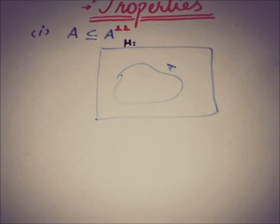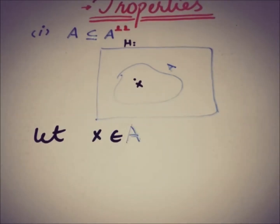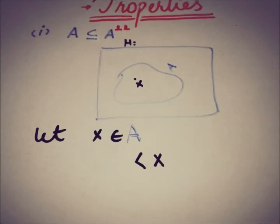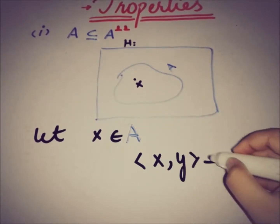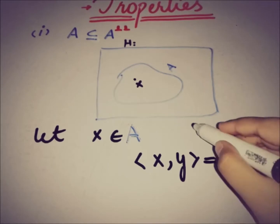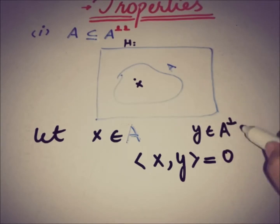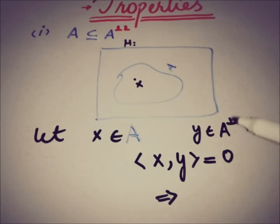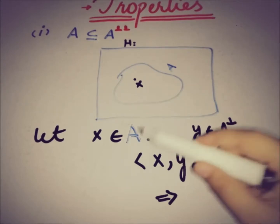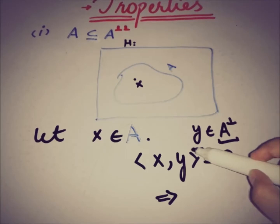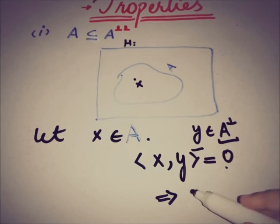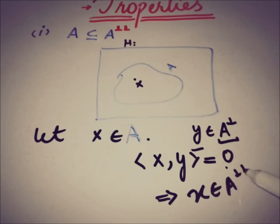The approach is the same: we take an element from A. Let's take a vector X from the subset A of H, and the inner product of this X with every element of A annihilator is 0. By definition, if X is from A and the inner product with every element Y is 0, then we can say that X belongs to the double annihilator.